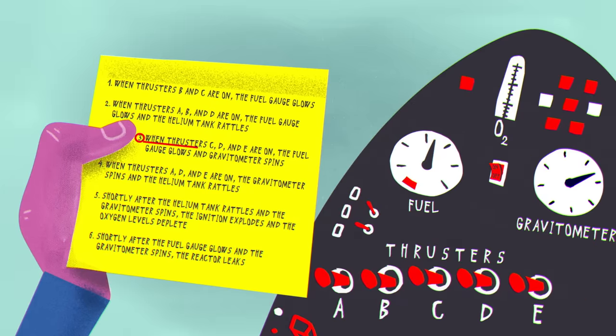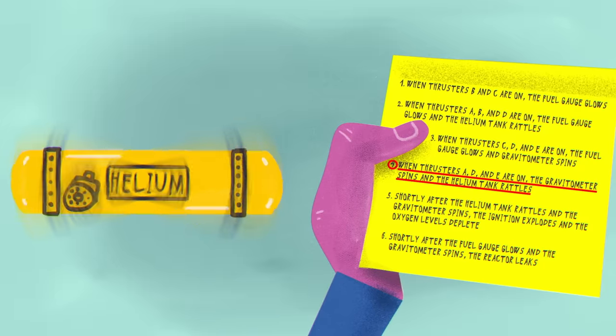3. When thrusters C, D, and E are on, the fuel gauge glows, and the gravitometer spins. 4. When thrusters A, D, and E are on, the fuel gauge glows, and the helium tank rattles.